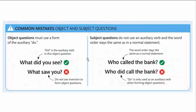Now let us point out the common errors regarding object and subject questions. First, for object questions: we must use a form of auxiliary 'do' — that means 'do' or 'did' is essential. 'What did you see?' is correct. If you were to construct 'what saw you' or 'what you saw,' inverting the subject and verb is completely incorrect. This form must be avoided.